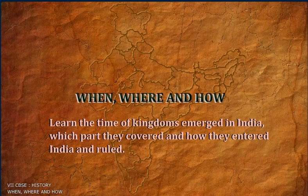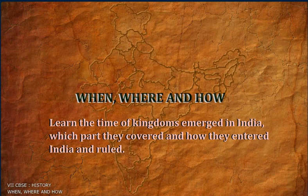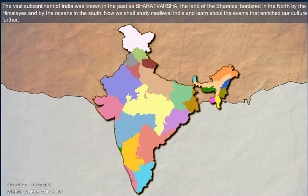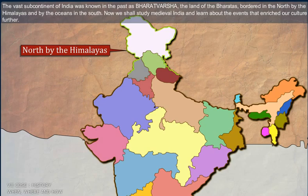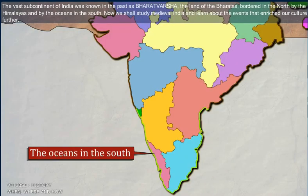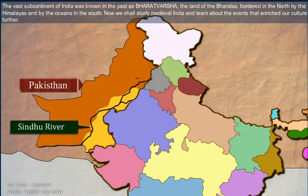When, where and how did the time of kingdoms emerge in India, which part they covered and how they entered India and ruled. The vast subcontinent of India was known in the past as Bharatvarsha, the land of Bharatas, bordered in the north by the Himalayas and by the oceans in the south. Now we shall study Medieval India and learn about the events that enrich our culture further.